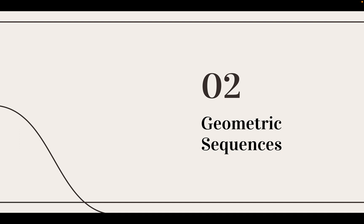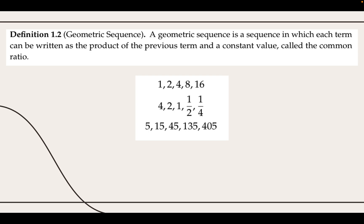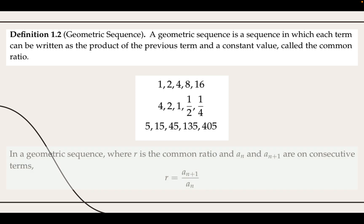Moving on, let's move on to geometric sequences. A geometric sequence is defined as a sequence in which each term can be written as the product of the previous term and a constant value, often referred to as the common ratio. For example, the three sequences shown here have common ratios of 2, one-half, and 3 respectively. Note that similarly to arithmetic sequences, the common ratio stays constant between each pair of adjacent terms.